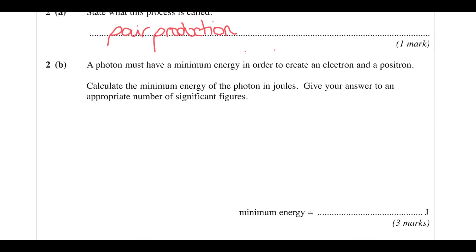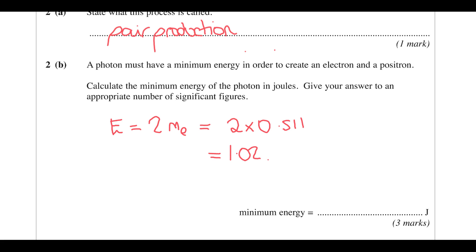A photon must have minimum energy in order to create an electron and a positron. The energy is going to be 2 times the mass of an electron — because that's an electron and a positron. Pulling that from the formula sheet, that's 2 times 0.511 MeV, which is going to be 1.02 MeV.